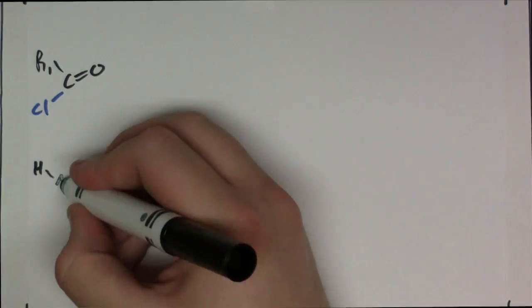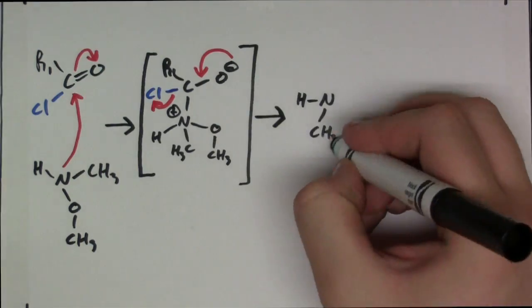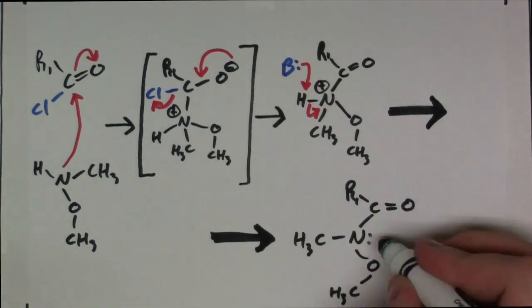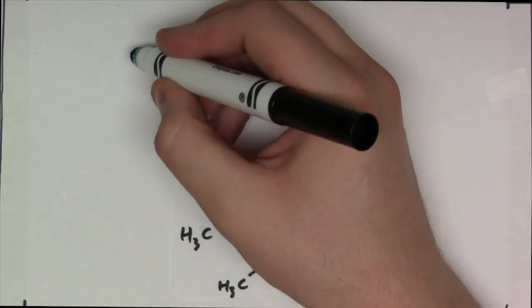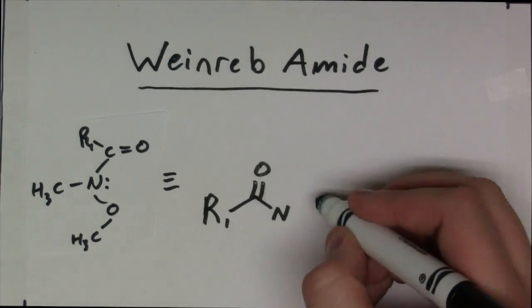The reaction between NO-dimethylhydroxylamine hydrochloride and your carboxylic acid derivative will proceed like this. This forms an amide. But not just any amide, the Weinreb amide, and this is a super cool molecule.